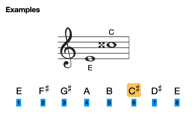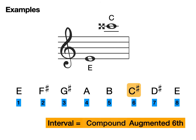But in our interval that we're working out, we have a C double sharp. Now, C double sharp is one semitone larger than the C sharp that is in E major. So this makes this interval an augmented sixth. Now, if you remember, our original interval is one octave higher. So we need to remember to use our word compound. So the answer to this question is compound augmented sixth.